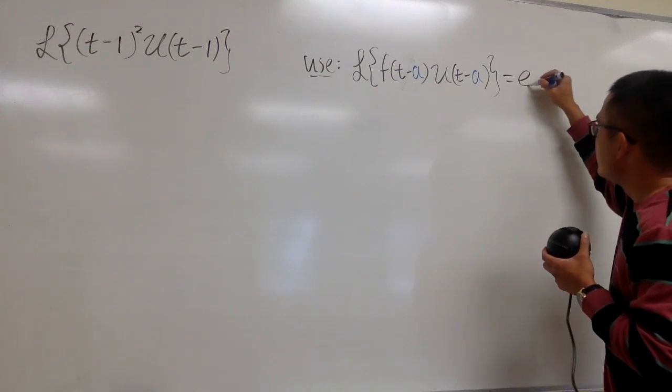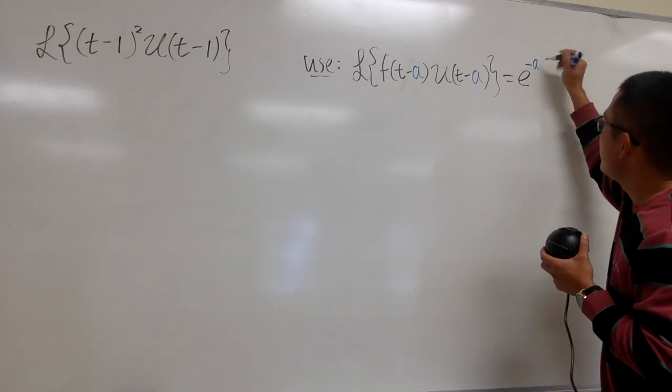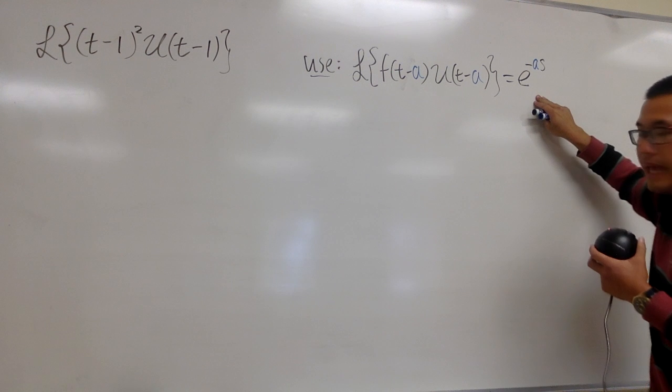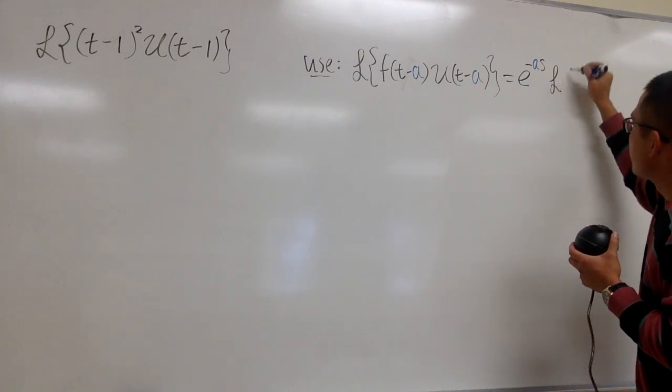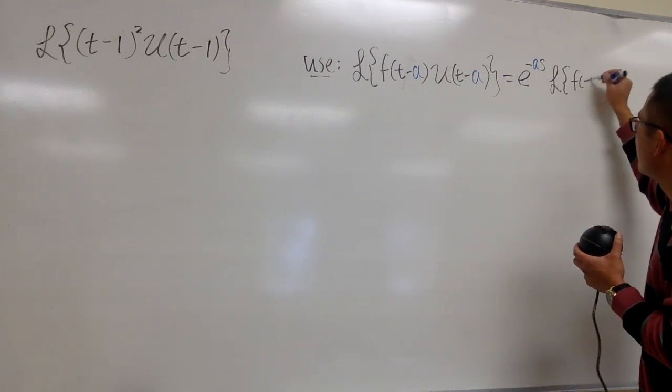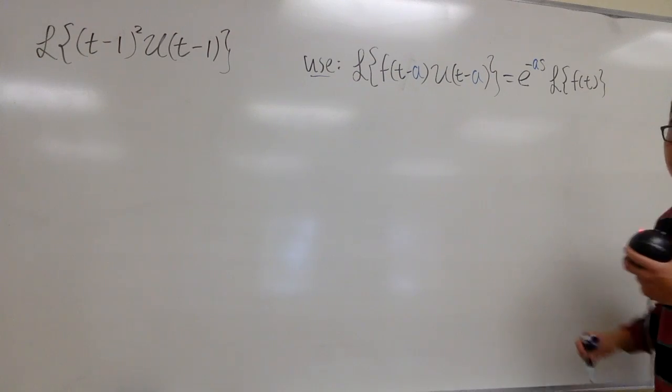We will first end up with e to the negative as, and then we multiply by the Laplace transform of the original f only, like this.